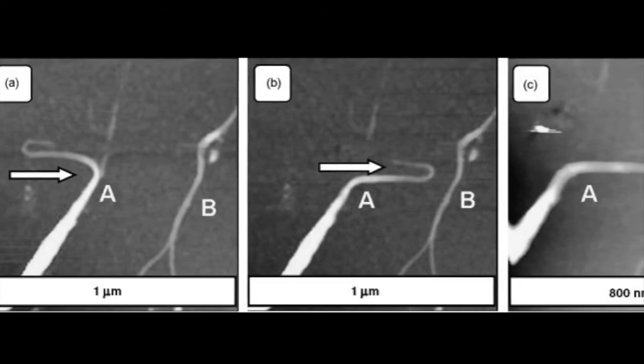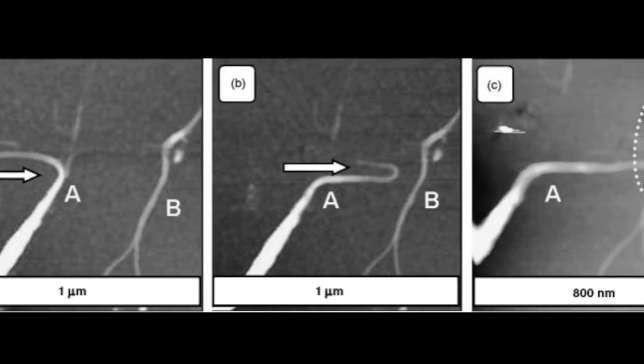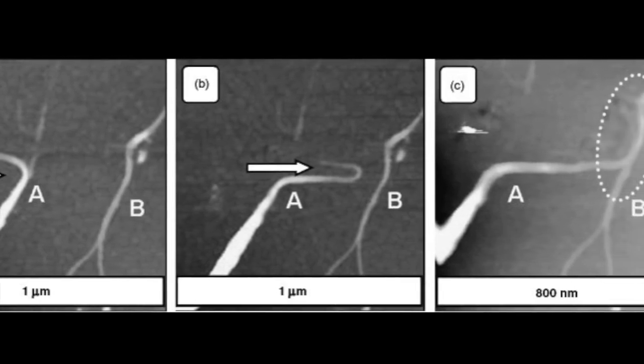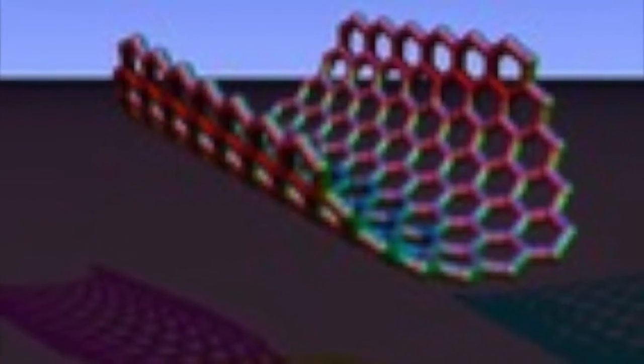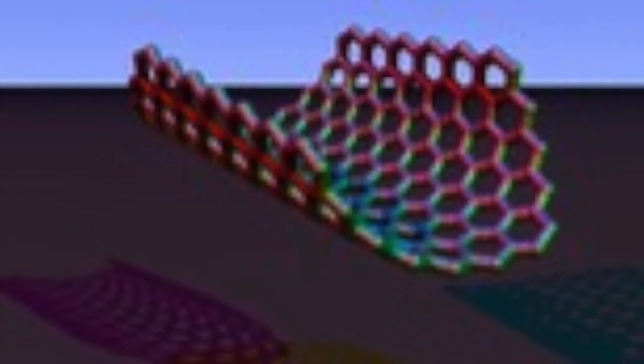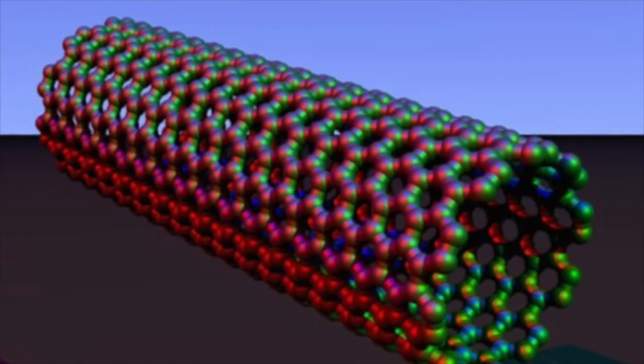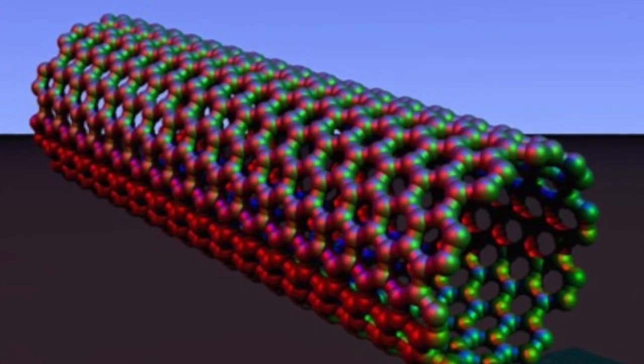Based on how the nanotubes are modified, they can be conducting or semiconducting. The processing of nanotubes leads to different properties that affect their function as transistors. Nanotubes can be produced into various cylindrical shapes and orientations along the carbon chains.